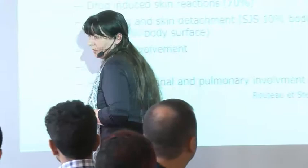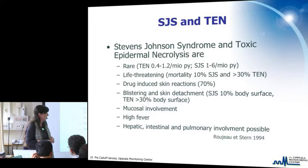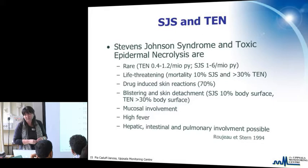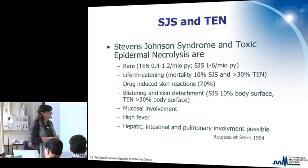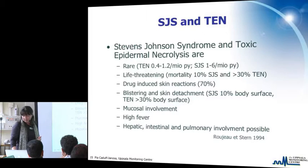Stevens-Johnson syndrome involves blistering and skin detachment covering about 10% of the body surface; TEN involves more than 30%. Mucosae are always involved — mouth, digestive tract, genital tract, and eyes — making this extremely painful. Patients cannot eat or drink and require intensive care. High fever is common, with possible hepatic, intestinal, and pulmonary involvement. The most commonly associated drugs are sulfa drugs, anticonvulsants, allopurinol, and NSAIDs of the oxicam and pyrazolone class.